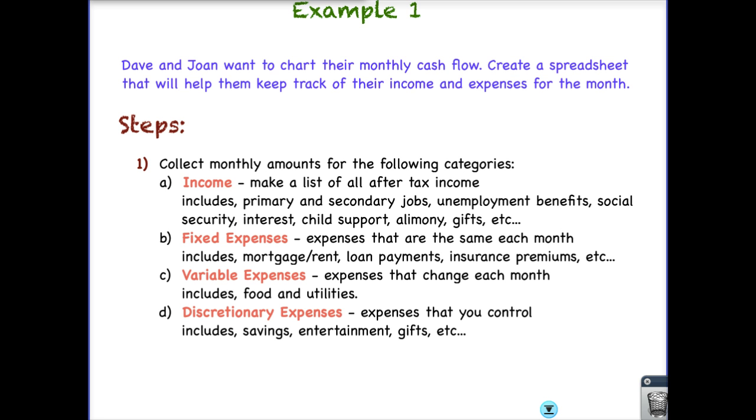So there's some steps that we follow when we create a monthly cash flow statement. The first step is to collect monthly amounts for the following categories. Income, first of all, we need to make a list of all after-tax income. And think about why we say after-tax. Because we don't actually get our taxes. Those come out, right? Our employer takes those out. So we get a lesser amount. If you remember back to previous lesson, we talked about gross income versus net income. And net income is after taxes are taken out. So our income that we would include would be our first jobs. Maybe we have a secondary job. Maybe we collect unemployment or Social Security. We could have a savings account and we earn interest. You might be collecting child support, alimony, getting alimony. Perhaps family has given you gifts. Any type of cash that comes in each month.